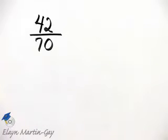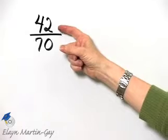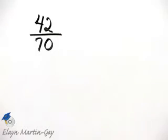Let's write this fraction in simplest form. And you can either see common factors, or if you don't, you can always write the prime factorization of the numerator and the denominator.